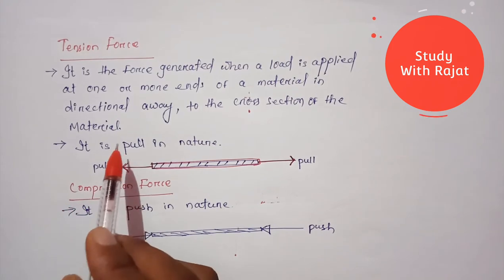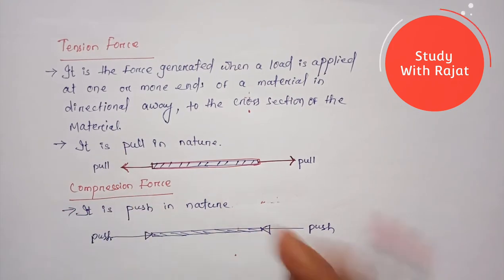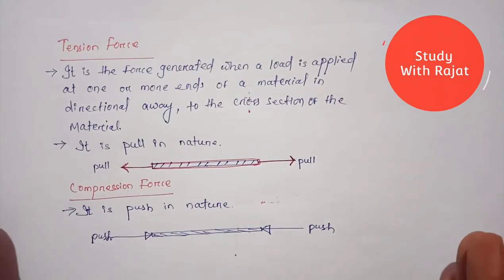Compression force is opposite to the tensile force. While in tensile force we are stretching it, but in compression force we are just pushing it. Push it means there will be compression will appear and its shape will be decreased.